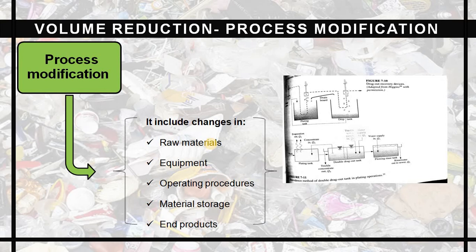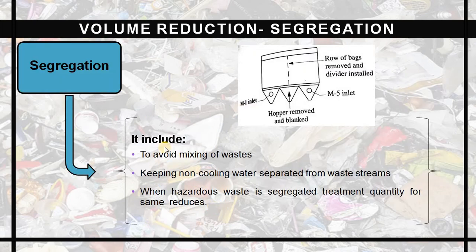Process modification includes changes in raw materials, equipment, operating procedures, material storage, and end products. Coming to segregation, we avoid the mixture of different kinds of waste and keep non-cooling water separated from the waste stream. When hazardous waste is segregated, the treatment quantity will also be reduced.